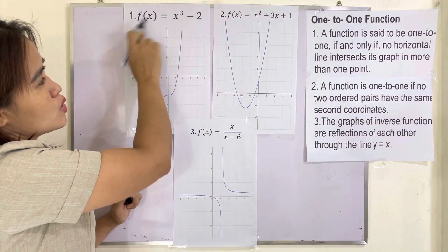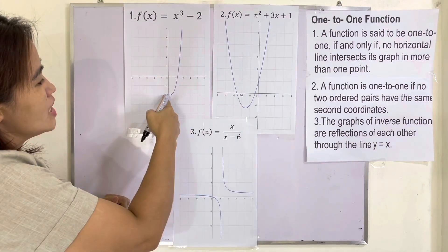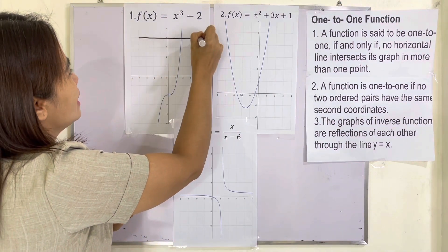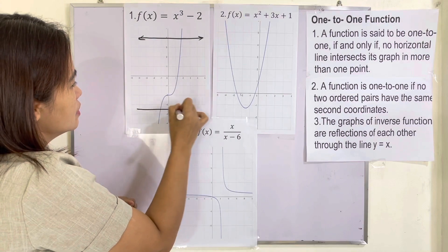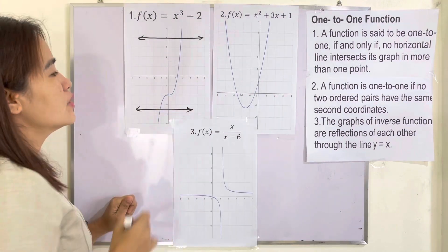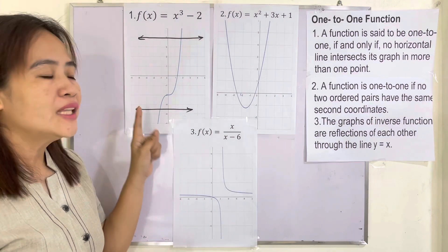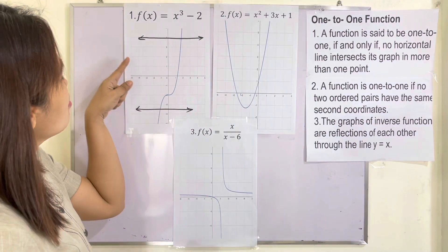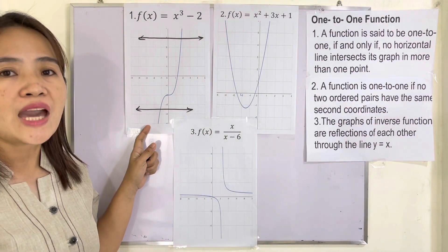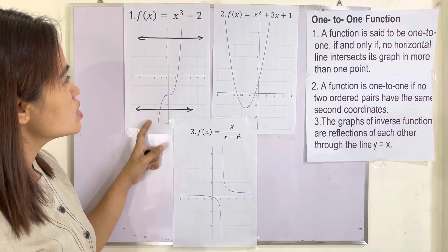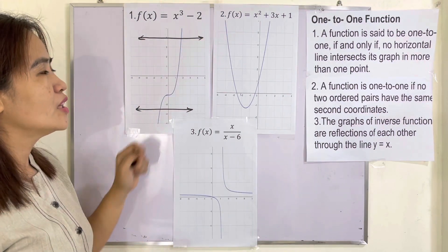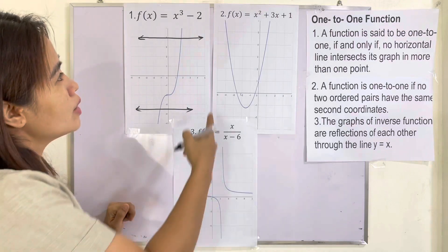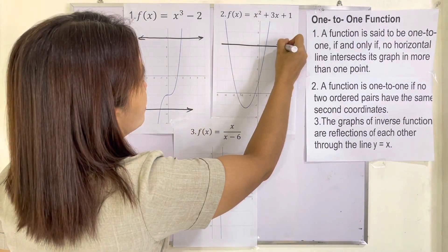What does that mean? It means that if you graph x cubed minus two — this is a function and this is its graph — if you draw a horizontal line anywhere on the graph, that horizontal line intersects the graph at only one point. So in number one, this is obviously a one-to-one function because the horizontal line intersects the graph at only one point.